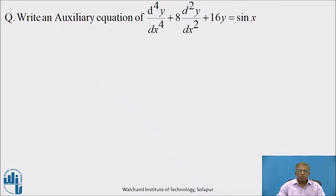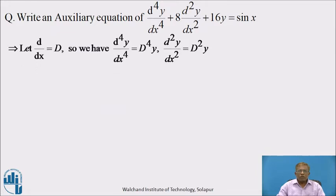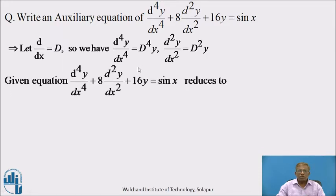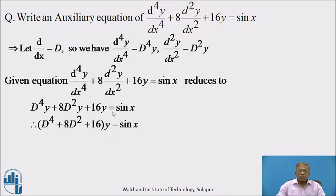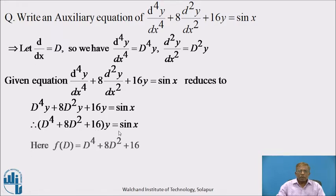Come back. I hope you returned an answer to this question. Let us see the solution. Here, the differential coefficient d/dx equals capital D, so that d⁴y/dx⁴ can be written as D⁴y, and d²y/dx² can be written as D²y. With these two notations, the given equation reduces to D⁴y + 8D²y + 16y = sin x. Taking y common on the left-hand side, we get (D⁴ + 8D² + 16)y = sin x. This is now in the form f(D)·y = X(x), where f(D) = D⁴ + 8D² + 16.